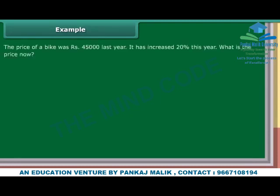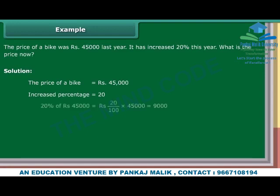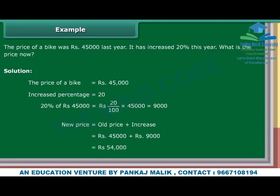Example. The price of a bike was Rs. 45,000 last year. It has increased by 20% this year. What is the price now? Solution. The price of a bike is Rs. 45,000. The increased percentage is 20%. 20% of Rs. 45,000 equals 20 upon 100 into Rs. 45,000, which is equal to Rs. 9,000. New price equals Rs. 45,000 plus Rs. 9,000, which is equal to Rs. 54,000.